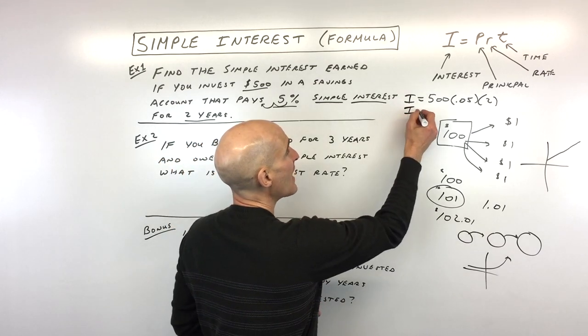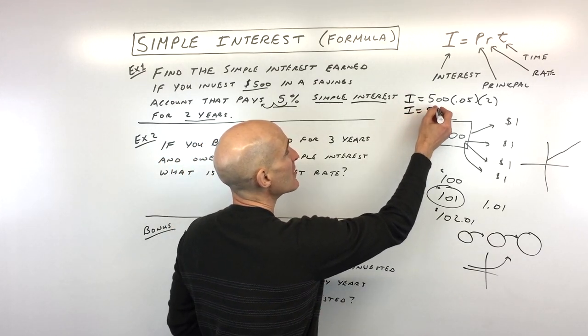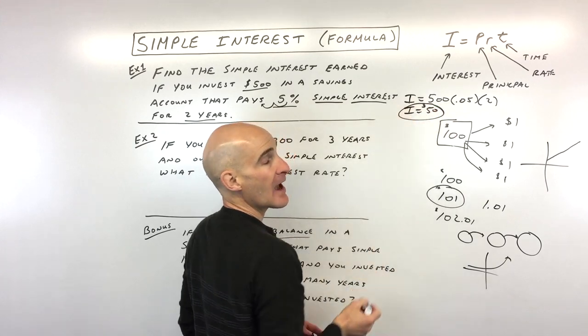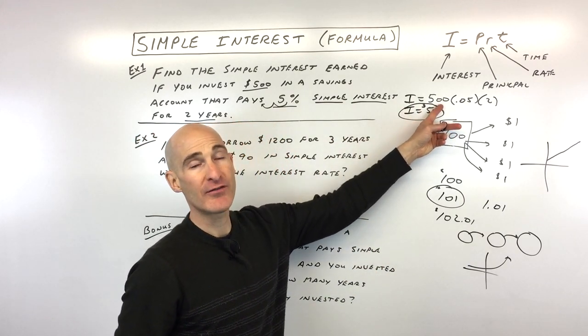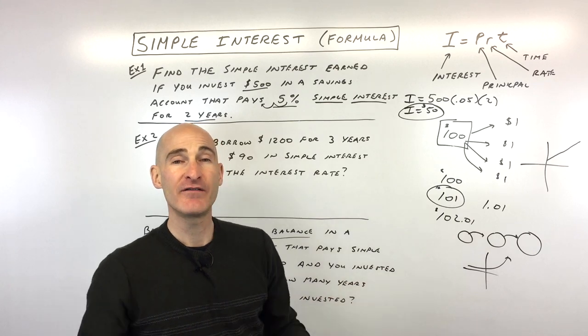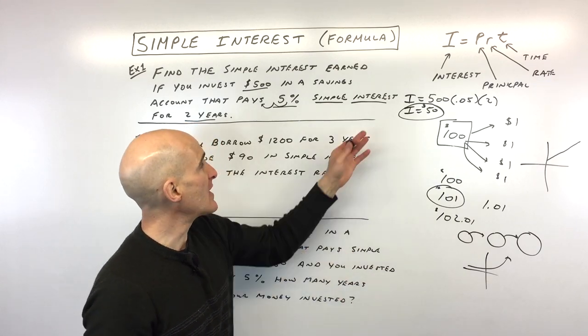Now, if the question asks how much money you have after two years, you'd have the $50 plus the initial amount, the $500. You'd add those together to get $550. That's our first example.